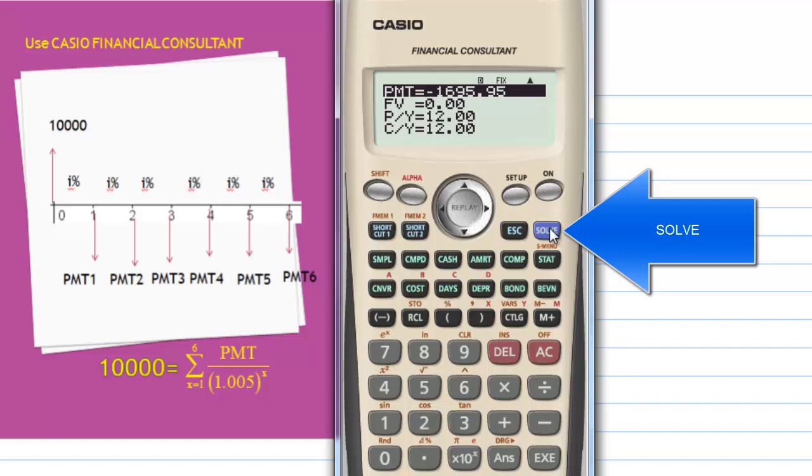So every month you need to pay $1,695.95.